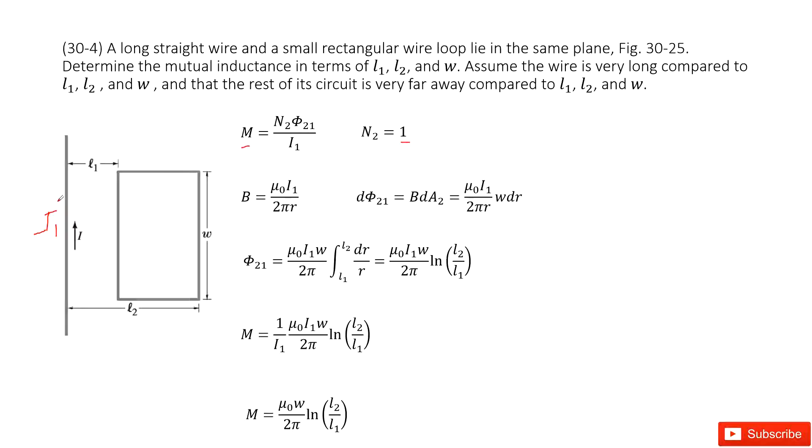The long straight wire, right? So this is the magnetic field from the long straight wire I1. And we can see, it changes with the distance r. This r is from the location where the wire is, and the location in this loop, right?